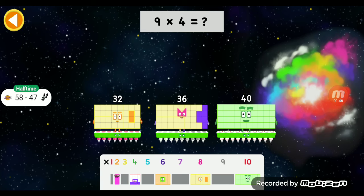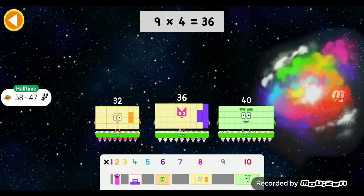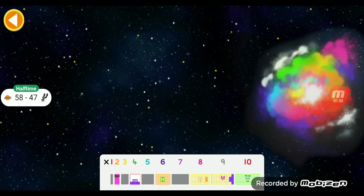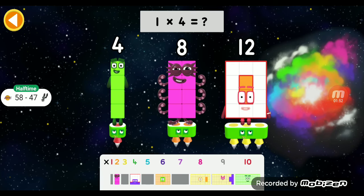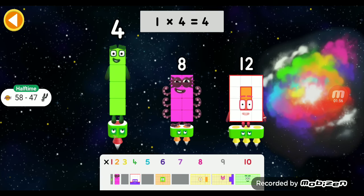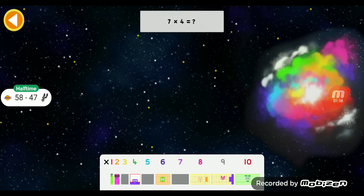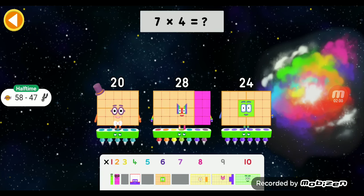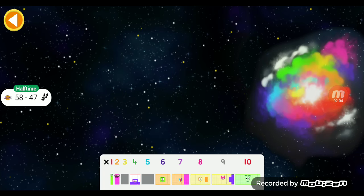9 times 4 equals 36. 36. 1 times 4 equals 4. 4. 7 times 4 equals 28. 28.